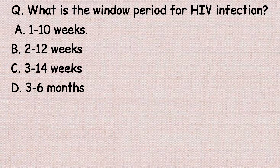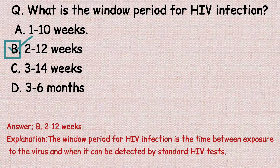The next question: what is the window period for HIV infection? Option A: 1 to 10 weeks. Option B: 2 to 12 weeks. Option C: 3 to 14 weeks. Option D: 3 to 6 months. The correct answer is option B, 2 to 12 weeks. The window period for HIV infection is the time between exposure to the virus and when it can be detected by a standard HIV test.